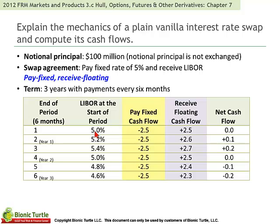We go forward half a year to the first exchange of payments. The counterparty paying fixed is going to pay half of the 5% of the notional 100 million: 5% times 100 million is 5 million, divided by 2 is 2.5 million. We're signifying this perspective with a negative sign.